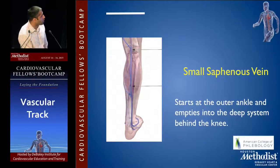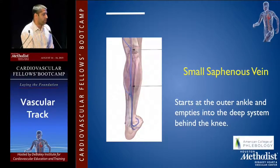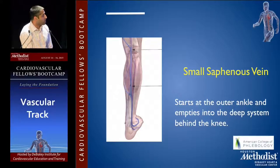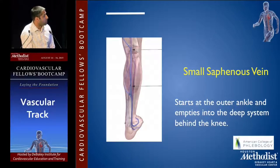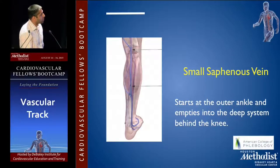The small saphenous vein starts at the outer ankle and empties into the deep system behind the knee. An important thing to know is its relationship with the sural nerve.